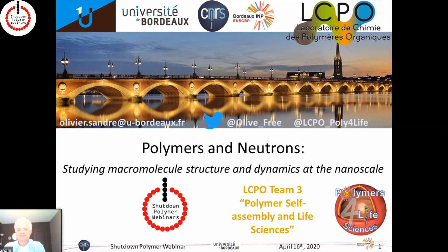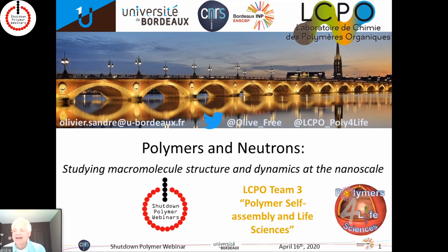This is a tutorial on neutrons and polymers, exploring what kind of information neutrons can give us as polymer scientists. The goal is to give an introduction to neutron science applied to polymers. Neutron scattering has been a very useful tool for polymer science for a long time, and hopefully by the end you'll be convinced of that.